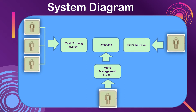For the system diagram, the components are: first, meal ordering system; database; ordering retrieval; and menu management system.